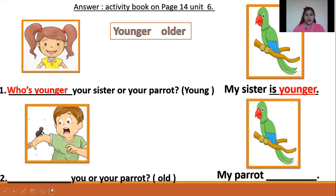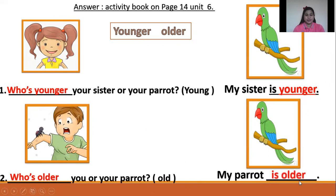WH Question: Who's older? And the comparative — older. Who's older, you or your parrot? My parrot is older. Who's older, you or your parrot? My parrot is older.